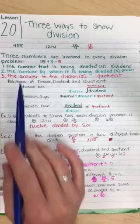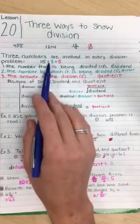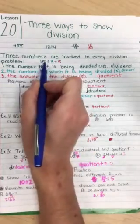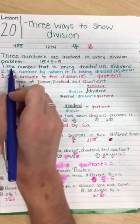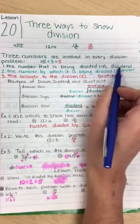So three numbers are involved in every division problem. For this one, we're going to use this example, 15. The number that is being divided is 15. It's called the dividend.